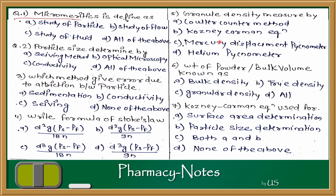Question 5: Granule density is measured by which method? Granule density formula is mass upon volume. The mercury displacement method is used to measure granular density, while helium or liquid displacement methods are used for true density. The answer is — mercury displacement method.